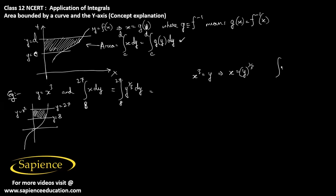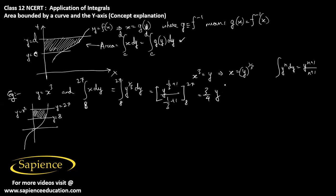We know that the integral of y power n dy equals y power n plus 1 divided by n plus 1. Applying this, we get y power 1 by 3 plus 1, divided by 1 by 3 plus 1, evaluated from 8 to 27. This simplifies to 1 by 3 plus 1 equals 4 by 3, so dividing gives 3 by 4, yielding 3 by 4 times y power 4 by 3, evaluated from 8 to 27.